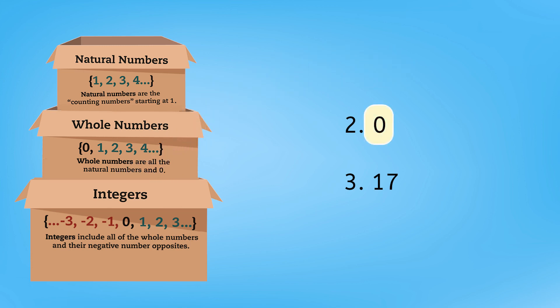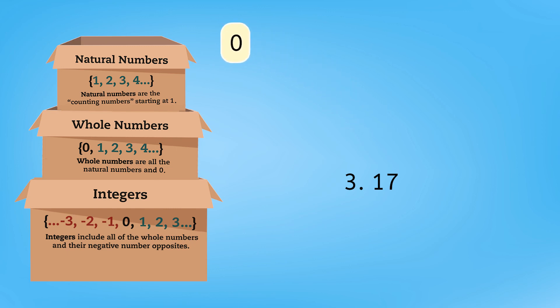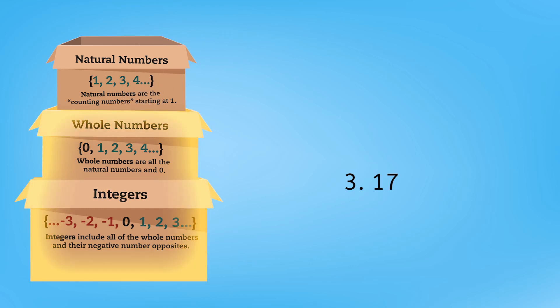What about zero? Well, we know zero is an integer, but can zero fit into any other categories? It's not a natural number, but it is considered a whole number. So we'll put zero into the whole number box, which also places it into the integer box. That means it's both.